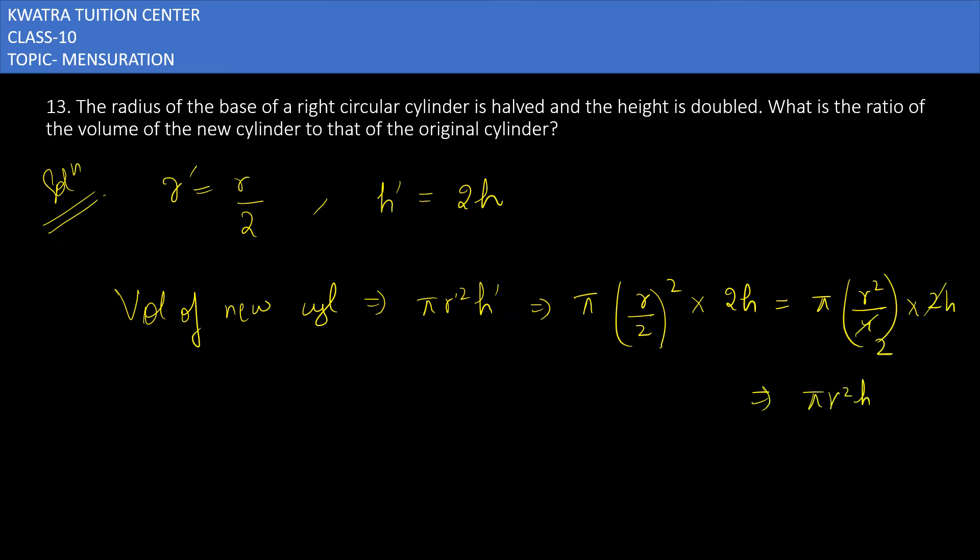Volume of the original cylinder is obviously π r²h. Now, to find the ratio, we divide: volume of new cylinder divided by volume of original cylinder. So (π r²h/2) divided by (π r²h). The π r²h cancels out.